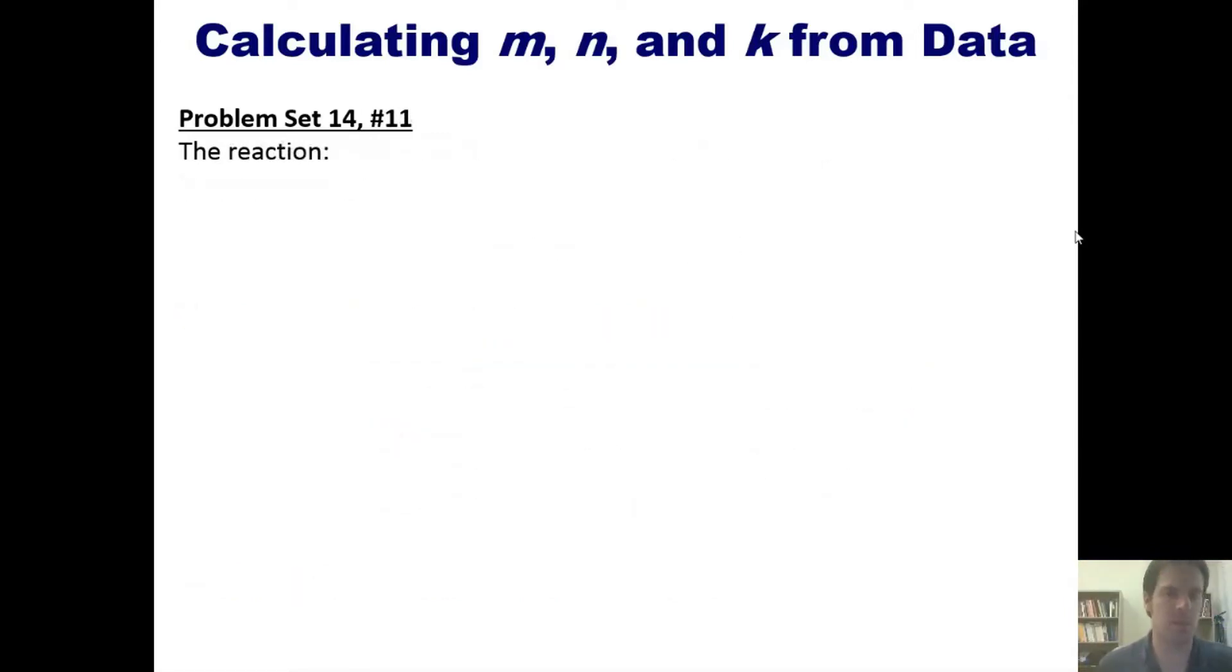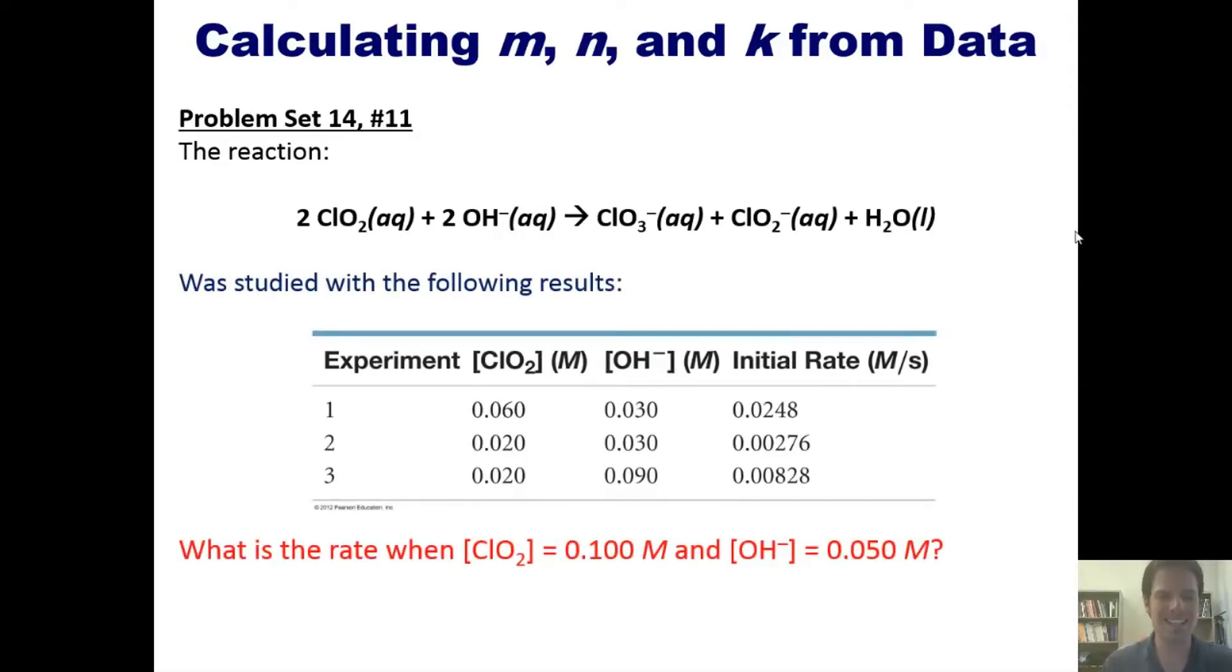Here's another exciting example. The reaction shown here was studied with the following results. What is the rate when the concentration of chlorine dioxide equals 0.100 molar and of hydroxide is 0.05 molar? You're welcome to pause and try this. You can then click this link to watch me solve it on the whiteboard.